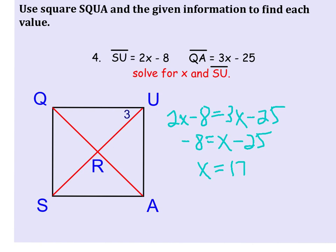Then it asks us to find SU, and so that just means we are going to plug 17 back in for x. So 2 times 17 minus 8, and 2 times 17 is 34. 34 minus 8, we get 26.